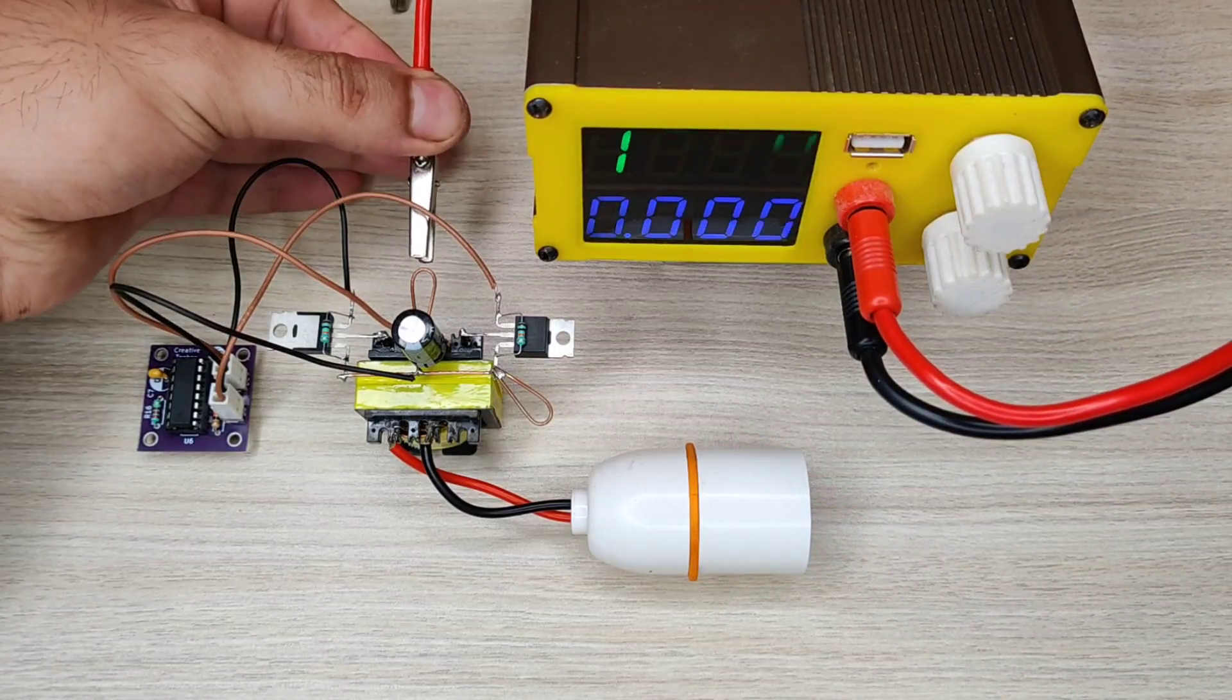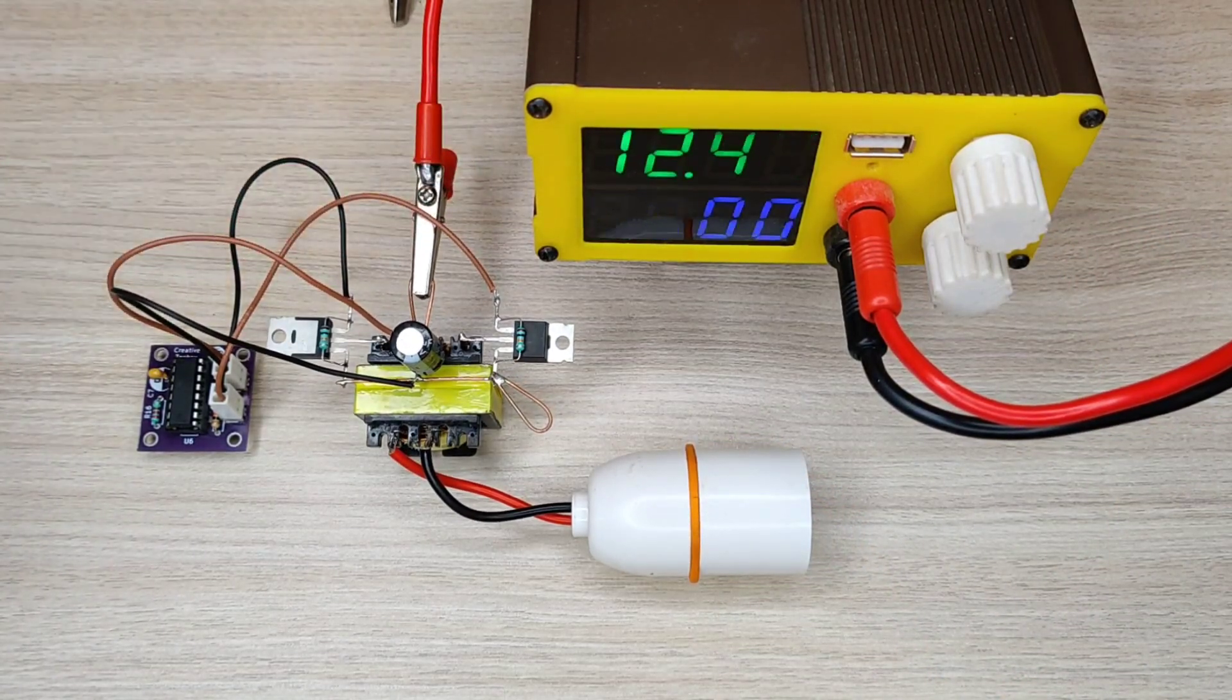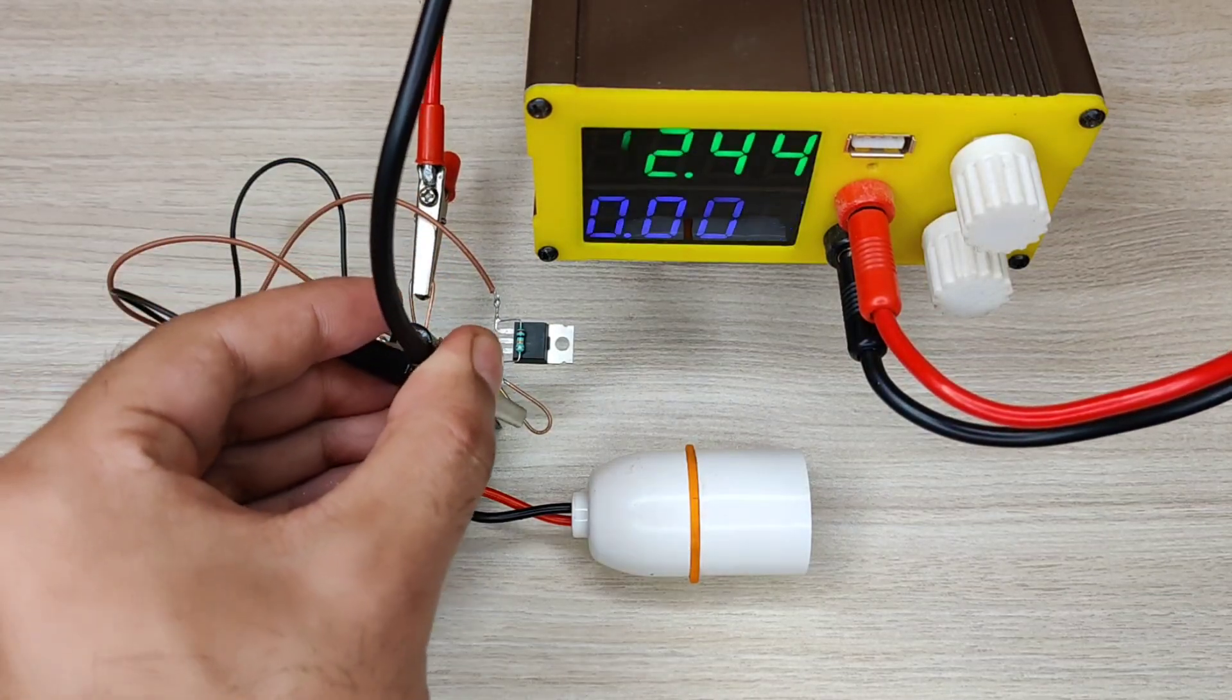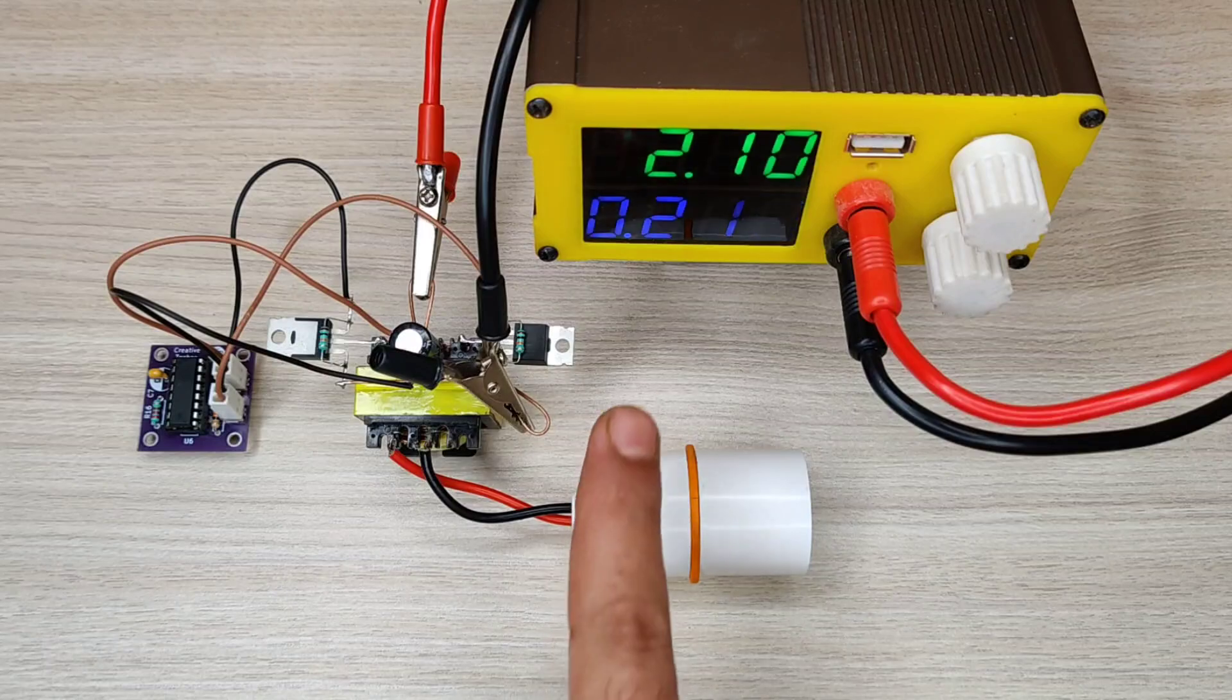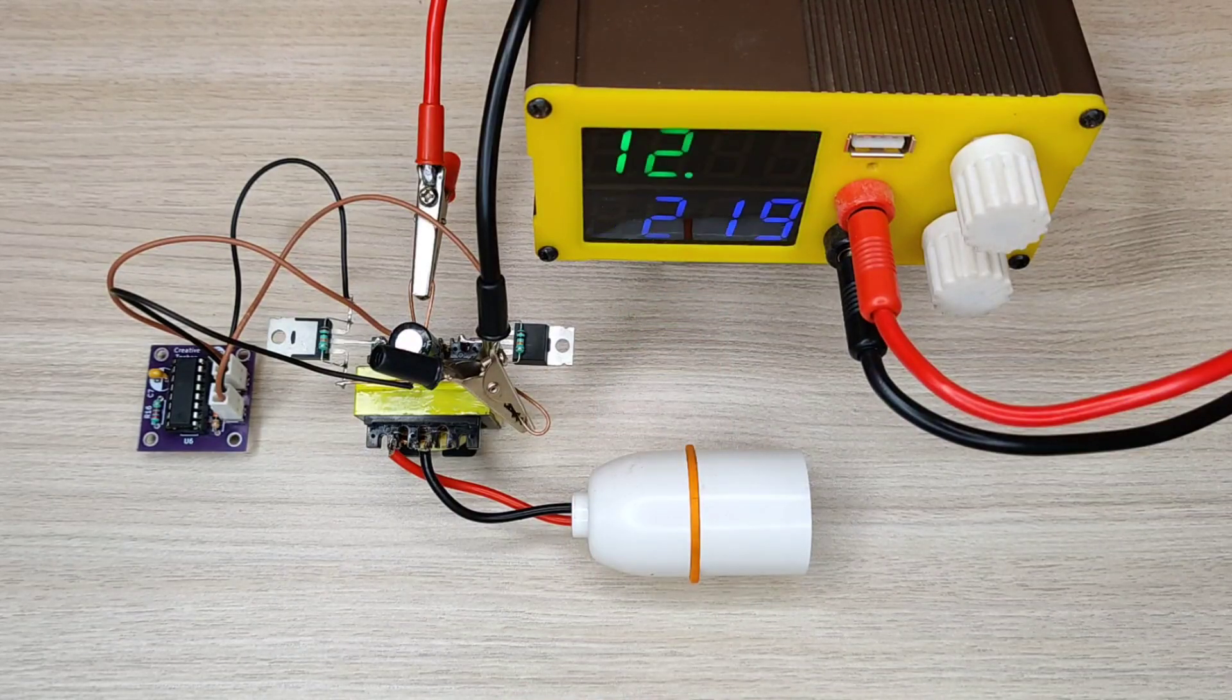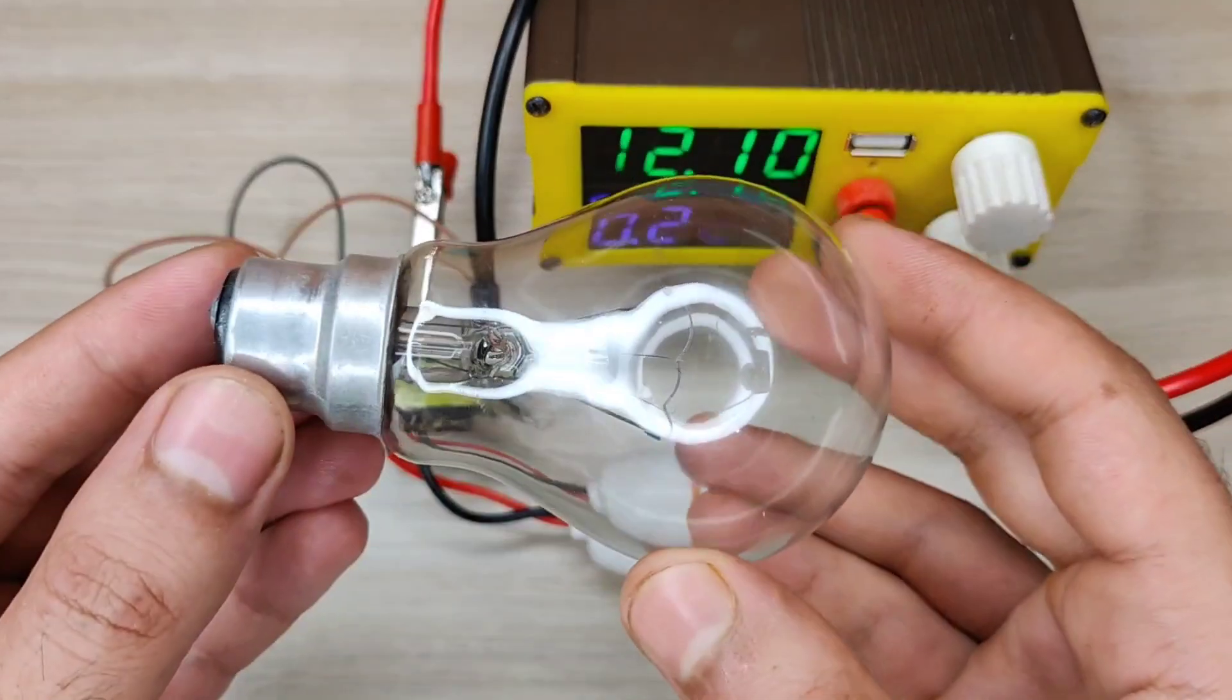Connect DC positive to center tap of transformer and negative with source of MOSFETs. As you can see, the no load current is only 0.2 ampere. Now let's connect the load.